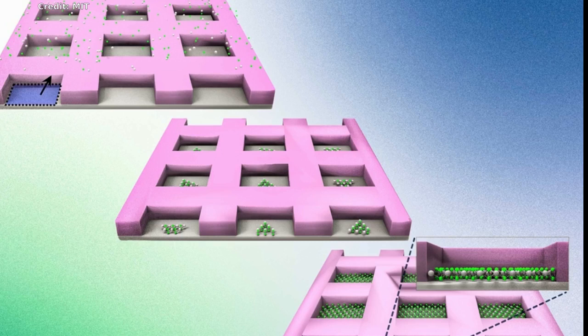With their method, the team fabricated a simple functional transistor from a type of 2D materials called transition metal dichalcogenides, or TMDs, which are known to conduct electricity better than silicon at nanometer scales.